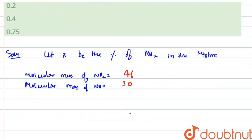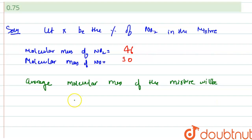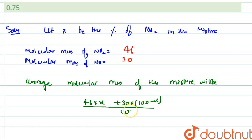The average molecular mass of the mixture will be: 46 multiplied by x, plus 30 into (100 minus x), upon 100. And this value is equal to 34, which is given in the question.